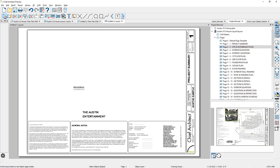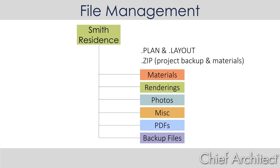At this point, I'm going to save both the layout file and the plan file in a new folder for this client. When I save the plan and layout file, I'm going to create a folder for the project — in the example on screen, I'm using the Smith Residence. I'll make sure that both the plan and layout files, since they're linked, are saved in that folder. You can also see other subfolders for renderings, photos, miscellaneous items like spec sheets or contracts, PDFs, and backup files.